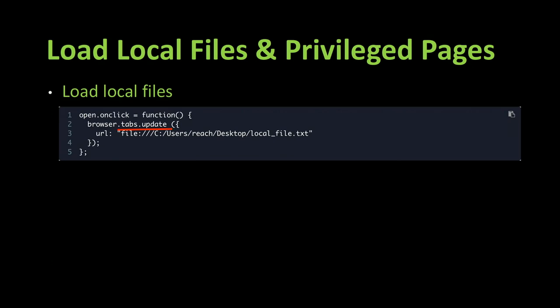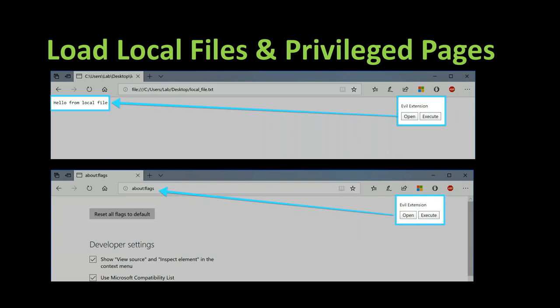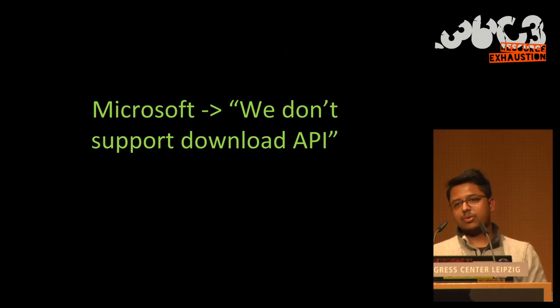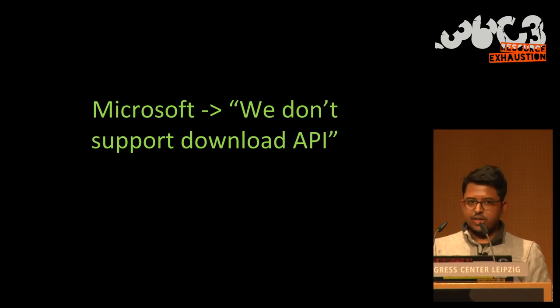Since browser.tabs.create wasn't working, the next method I looked at was tabs.update. I tried the same thing with the update method, and somehow it worked for me. Once I figured out I could load local files, I also wanted to try privileged pages — and it was working fine as well. As soon as you click the Open button, the browser loads a local file and also a privileged page on Edge.